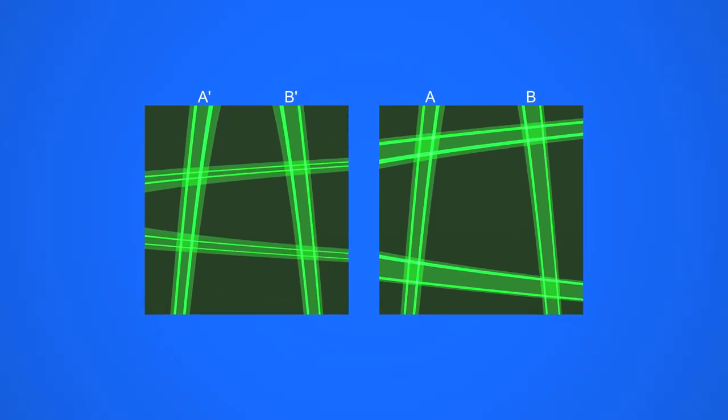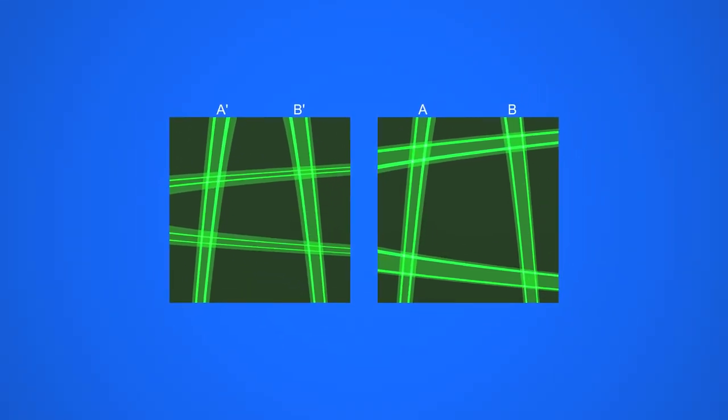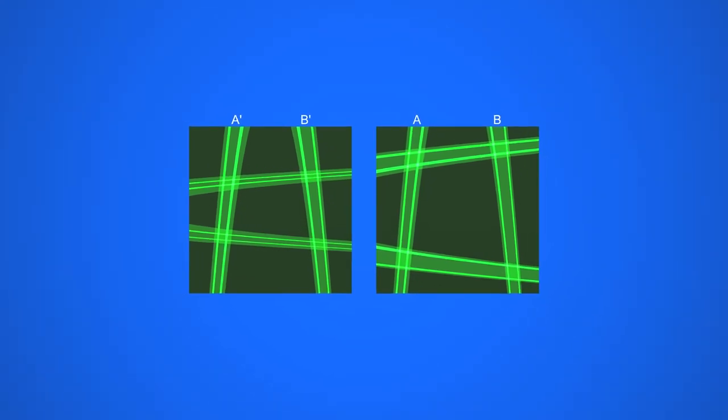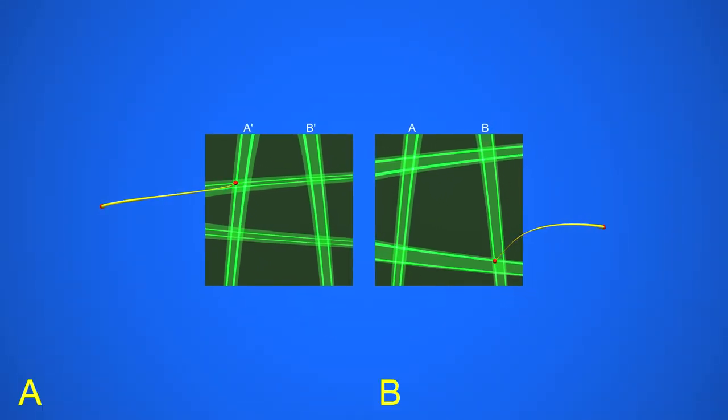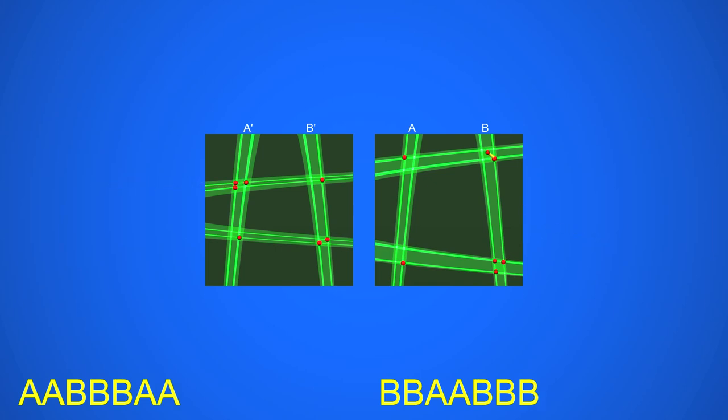And it can be shown in the same way that the trajectories on this new horseshoe are still described by sequences of A primes and B primes. The modified horseshoe is just as chaotic as the original one. Chaos is really there. Indestructible.